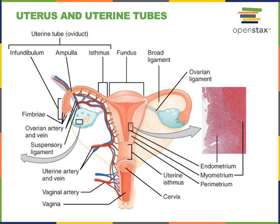The uterine tubes connect into the uterus and function to transport the secondary oocyte after ovulation toward the uterus. Fertilization occurs inside the uterine tube, and then the zygote divides, becoming an embryo that implants into the wall of the uterus. The inner lining of the uterine tube is a mucous membrane with a ciliated simple columnar epithelium, and the cilia function to help transport the oocyte, sperm, and embryo through the uterine tube.